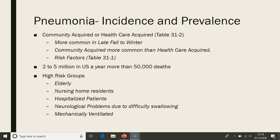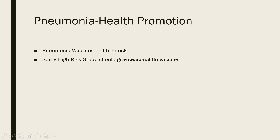Two to five million people a year in the U.S. get pneumonia, and more than 50,000 die. High-risk groups include the elderly, nursing home residents, hospitalized patients, people with neurological problems due to difficulty swallowing, and those on mechanical ventilation. These groups should get the pneumonia vaccine, and the same high-risk group should also receive the seasonal flu vaccine.